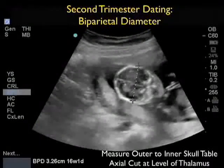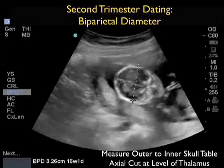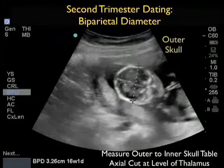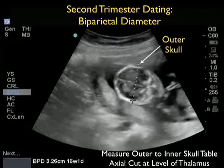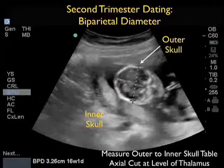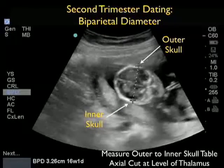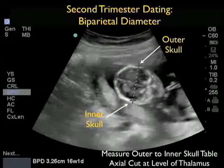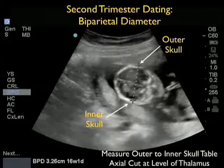In the second trimester, dating of gestational age focuses on skull circumference or measurement of the biparietal diameter. We want to measure the skull at about the level of the thalamus in an axial orientation with the face down. As we can see here, we're placing the calipers from the outer skull table proximally to the inner skull table distally, and we have a measurement of 3.26 centimeters correlating to a 16-week, one-day gestational age.